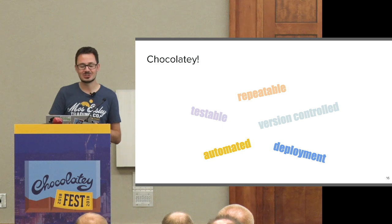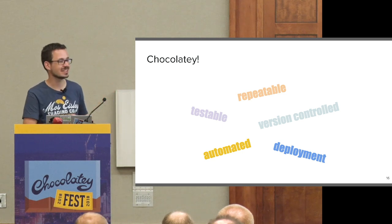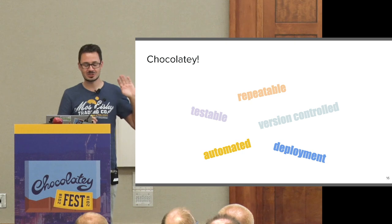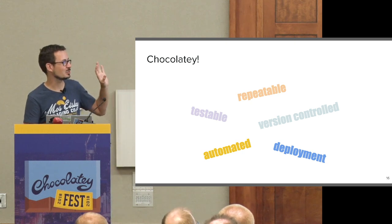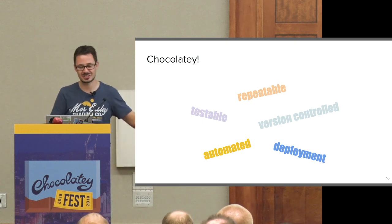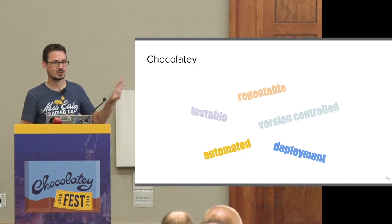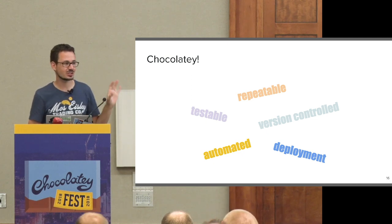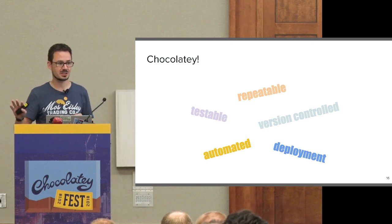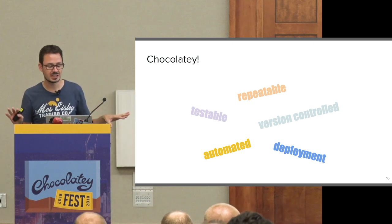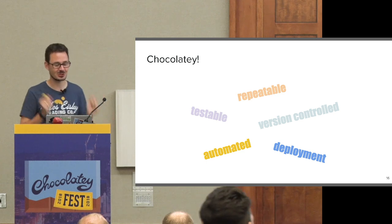I've tried to create this very bizarre-looking tech cloud, but believe me, those are not just buzzwords — I'll add a little more context to each of those words shortly. For me, the most important thing about having Chocolatey in our development infrastructure — for both the development hosts and servers — is that we now have repeatable, testable, version-controlled, automated deployments.